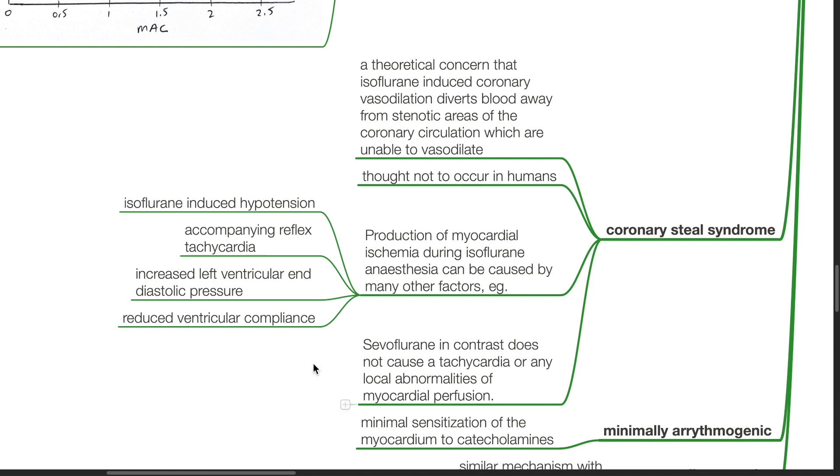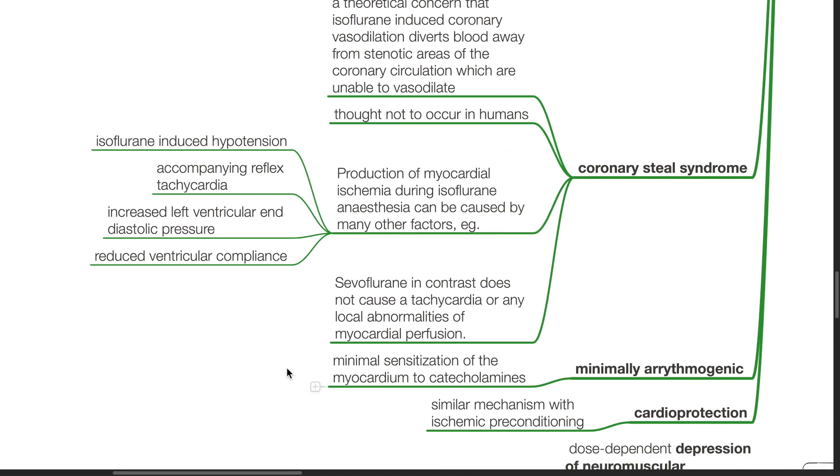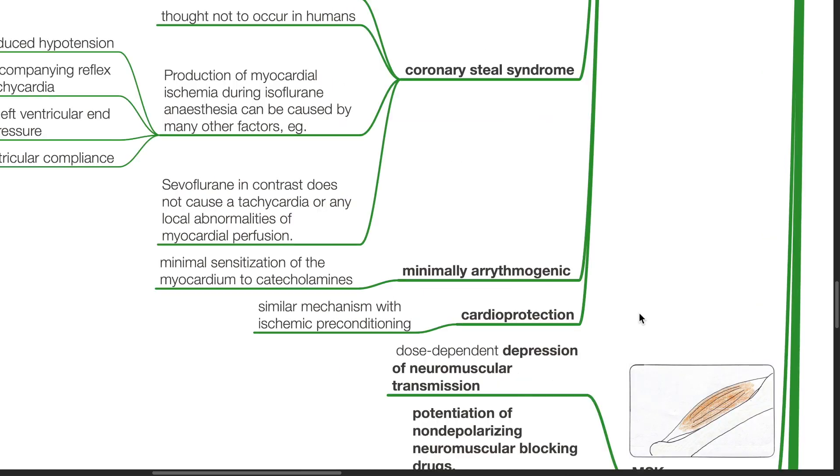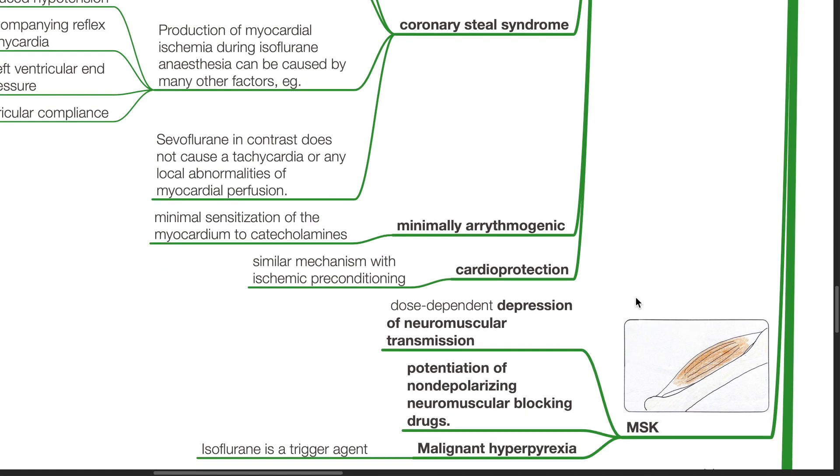Sevoflurane in contrast does not cause tachycardia or any local abnormalities of myocardial perfusion. Isoflurane is minimally arrhythmogenic. There is minimal sensitization of the myocardium to catecholamines. Cardioprotection occurs via a mechanism similar to ischemic preconditioning.